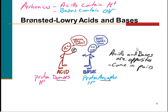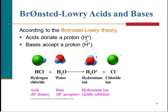Acids donate protons; bases accept protons or hydrogen ions. Here we see hydrogen chloride — HCl is an acid. It has the hydrogen ion in the Arrhenius sense, but HCl is a gas. When you dissolve that gas into water, you get a hydronium ion in solution, as well as the chloride ion. HCl doesn't just dissolve — it actually reacts with the water. A hydrogen ion is donated to the water, so H2O becomes H3O+, which is called the hydronium ion.